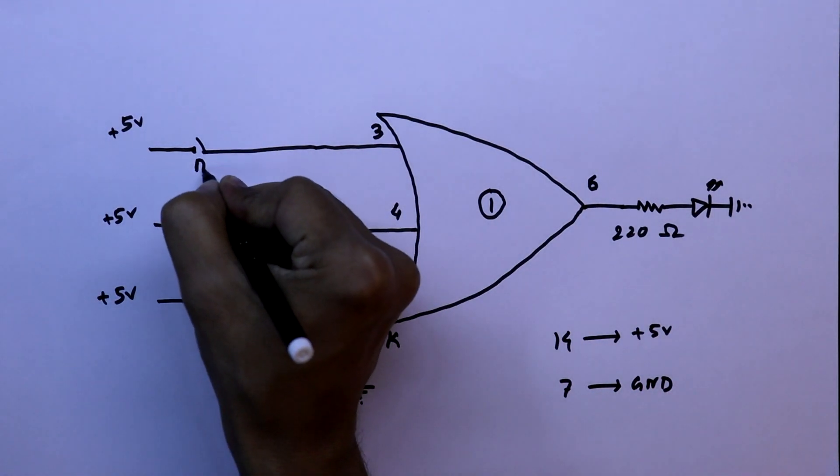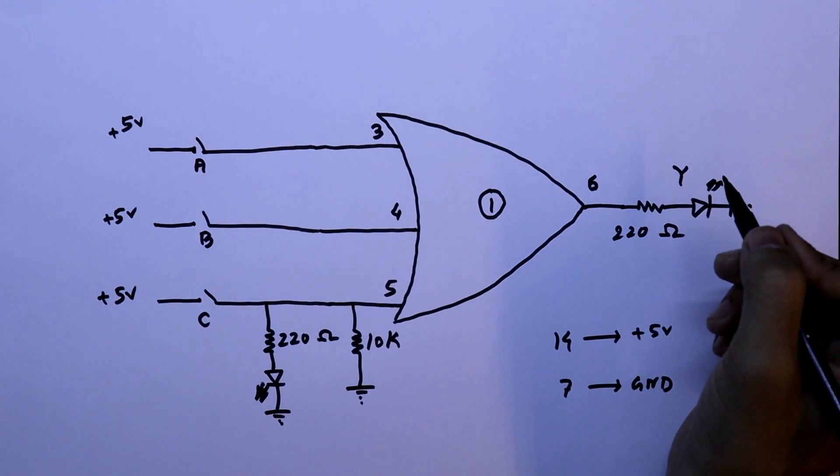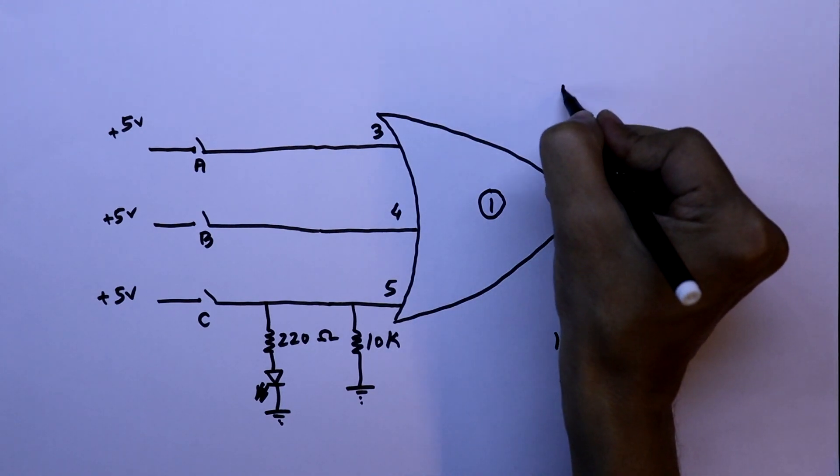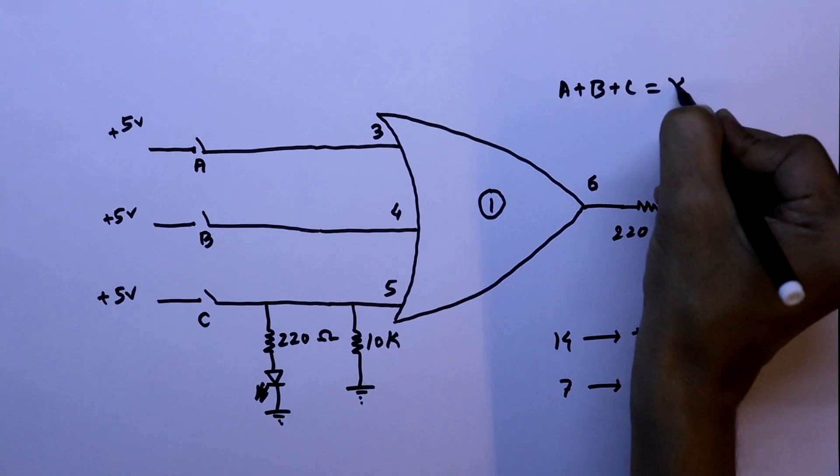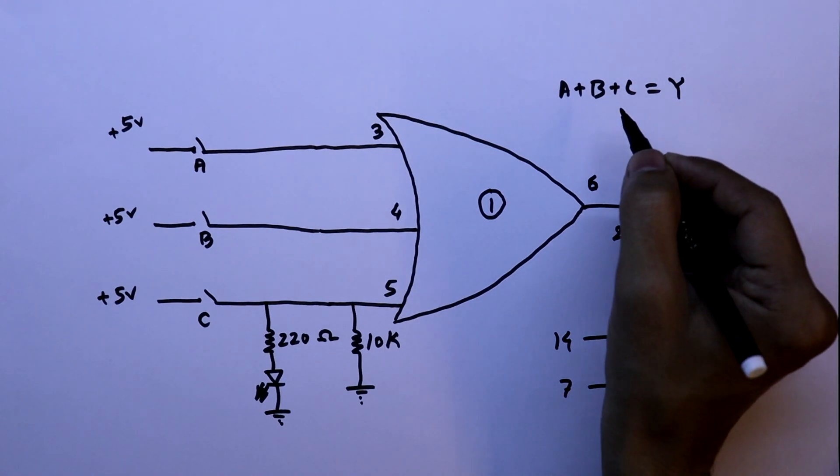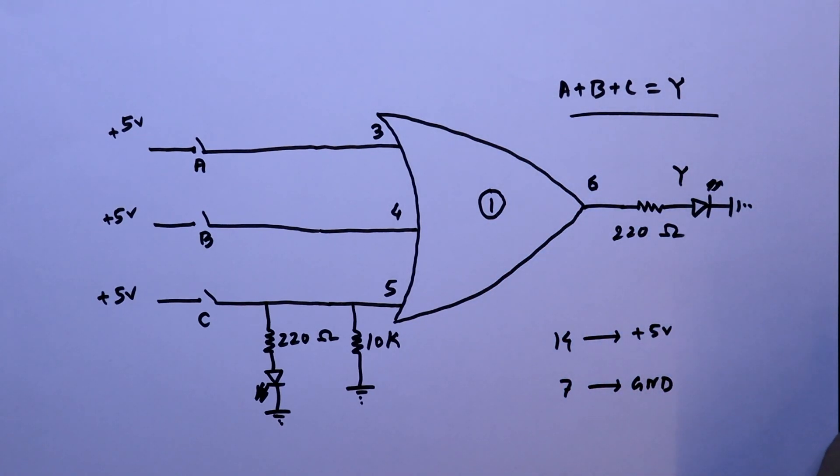Input A, B, and C. Y is the output. So the equation will be A plus B plus C equals Y. If any one of the inputs is 1, then we will get output as 1. We will verify this on the breadboard.